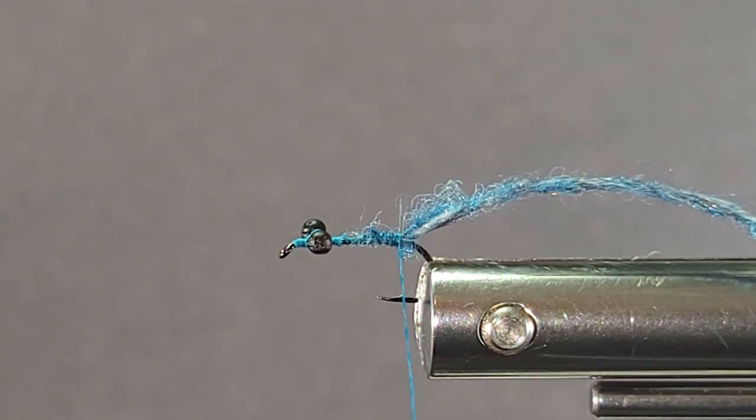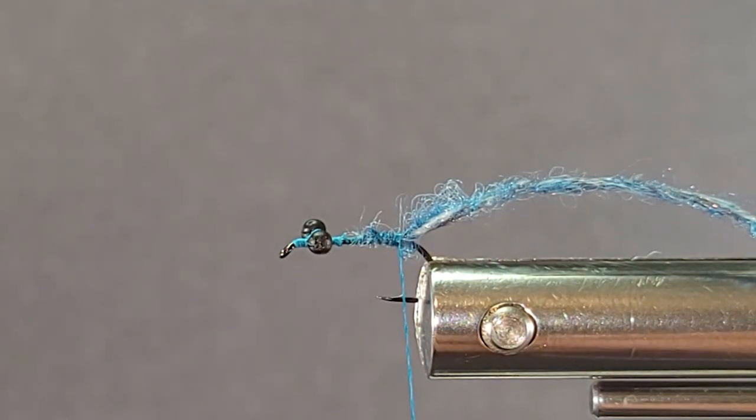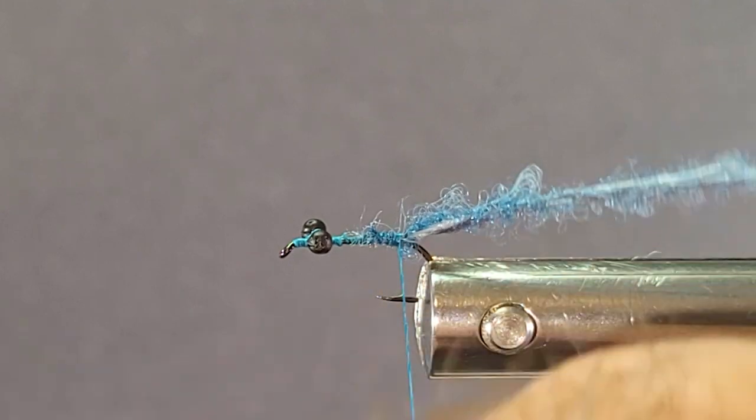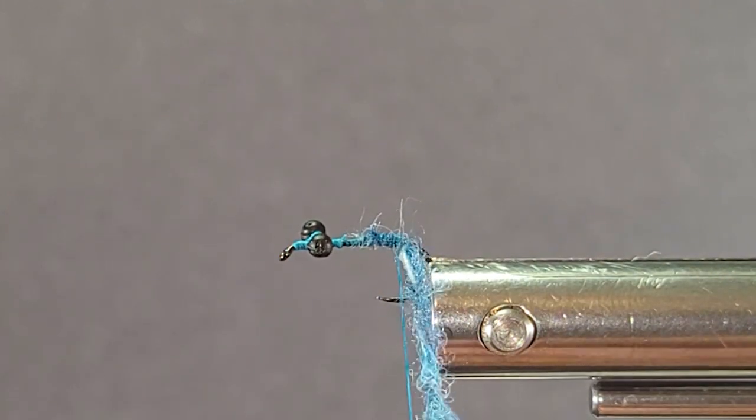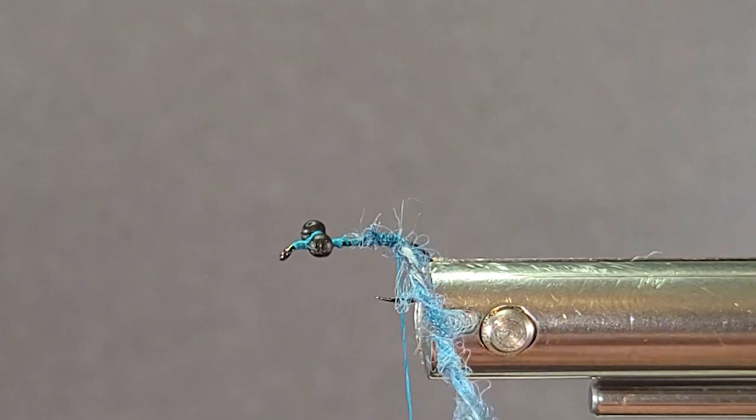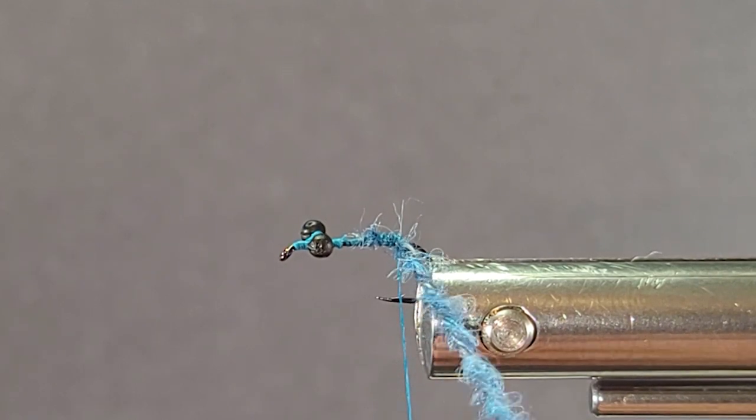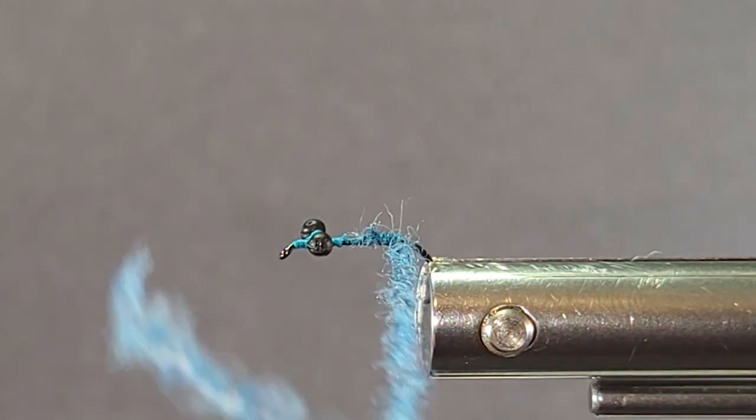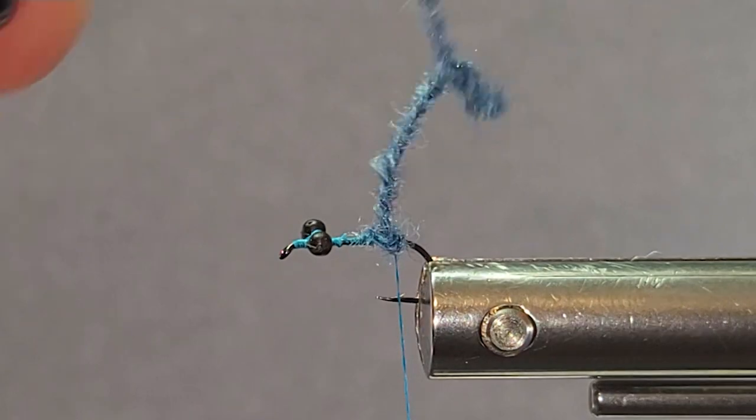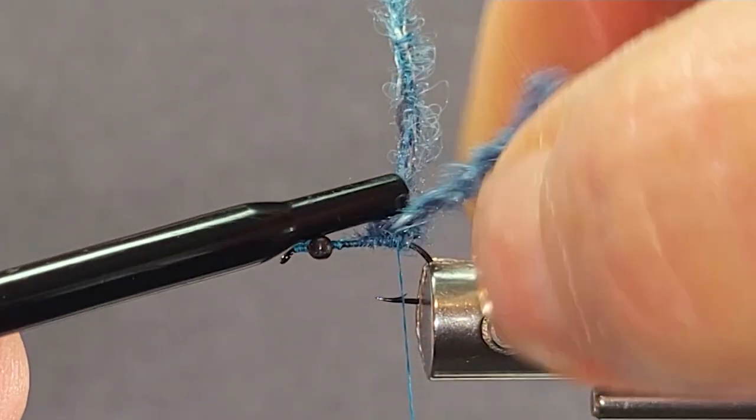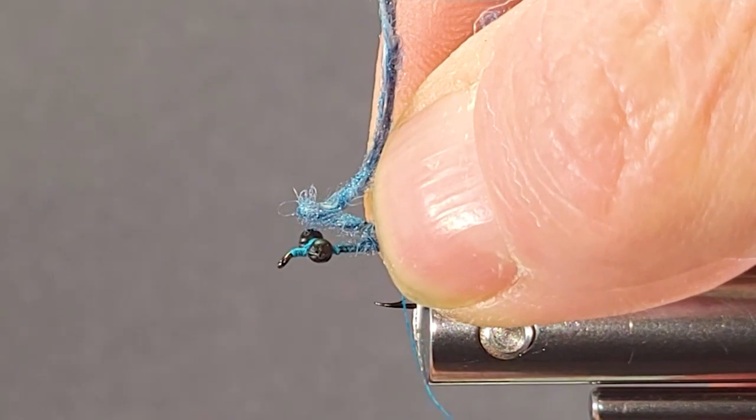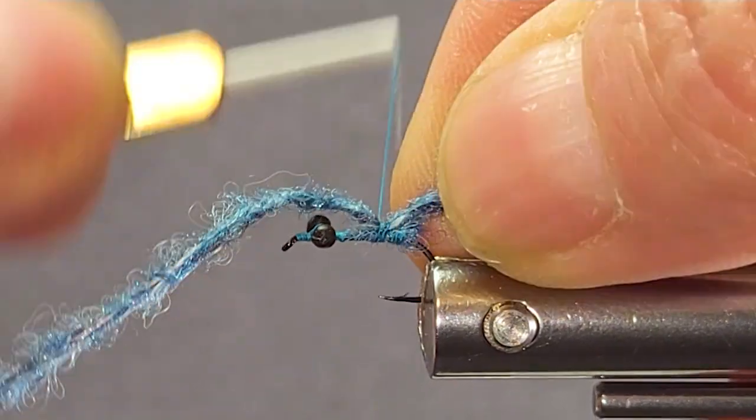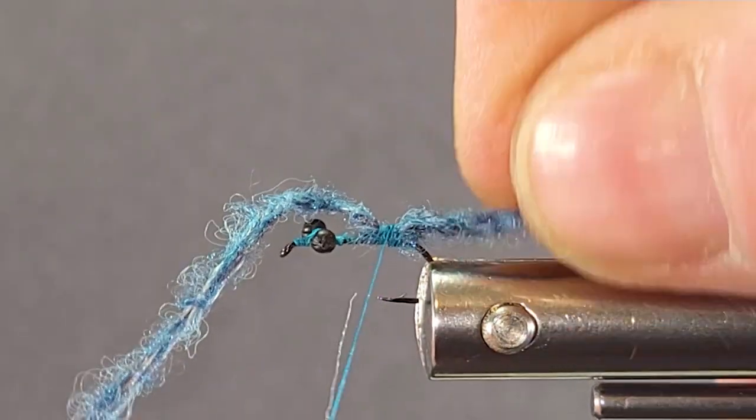Now we're going to furl that body. What that means is I want to double it over itself. I need to have twice as long. I'm going to twist this up, and it's going to roll back over itself. It's going to look like it's braided. I call that a furled body. When I slack off the tension here, it's going to want to wrap around itself. That's a furl. They used to have furled leaders actually years ago.